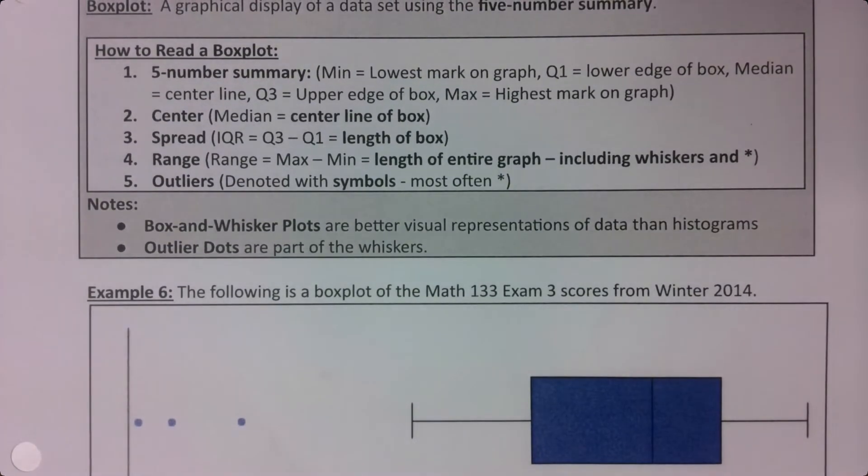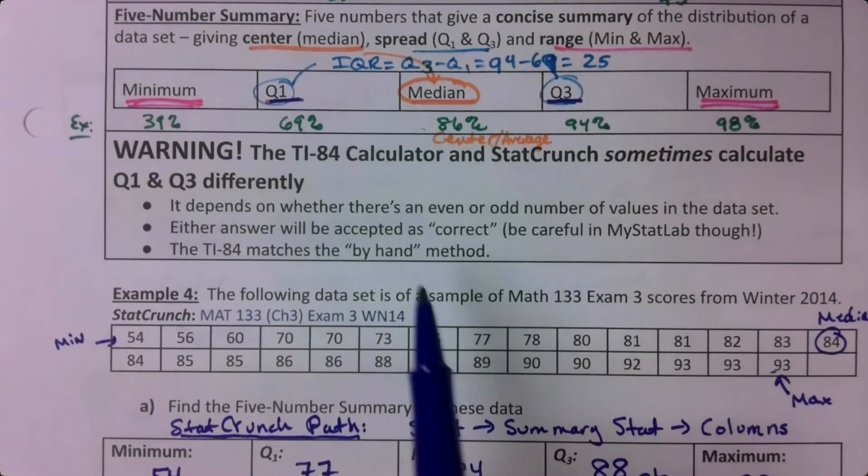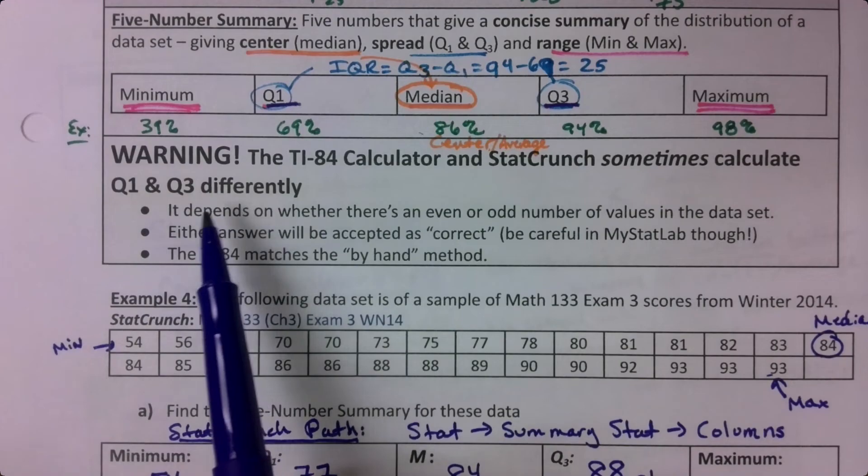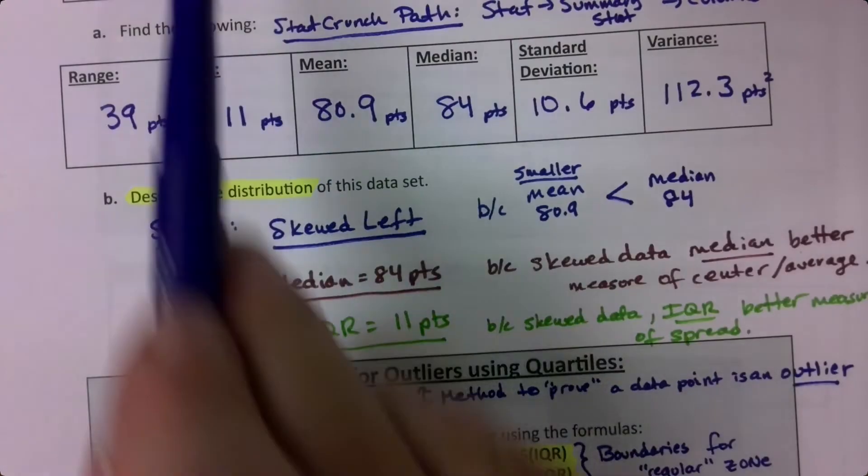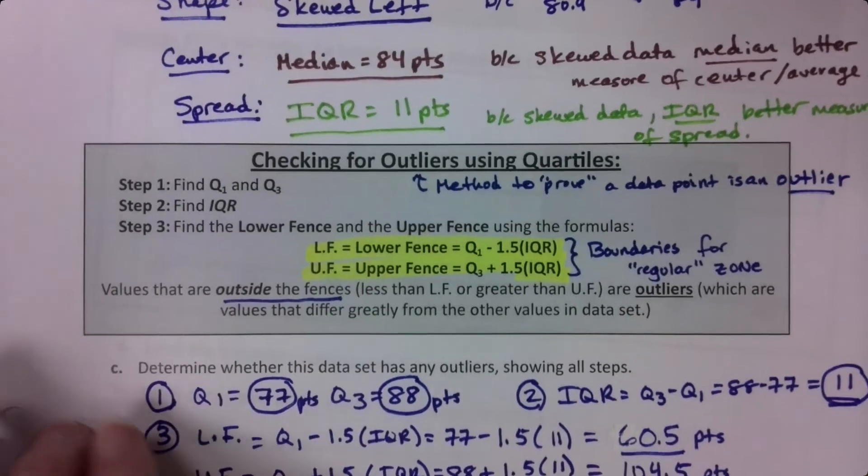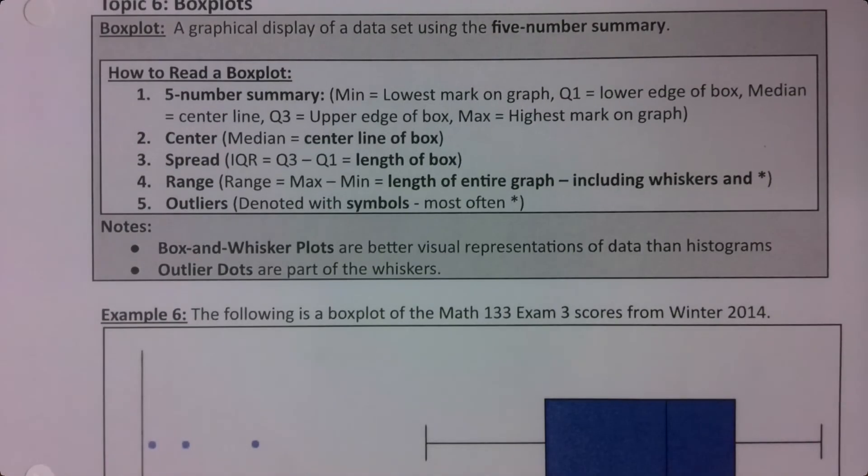The box plot does change when you're using StatCrunch versus Minitab, which was the program I was using earlier. It's not a big deal. It's based on that comment I made in a previous video, which is that different computers and calculators calculate Q1 and Q3 differently. Therefore IQR is calculated differently, therefore the outliers are different. It's kind of a domino effect because the quartiles are different, then everything else is different. It's just the way that certain software works.